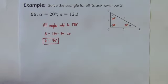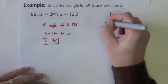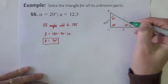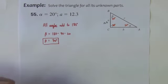Now we also need all three sides. We know this one is 12.3. We don't know the other two. So that's where we're going to go next and